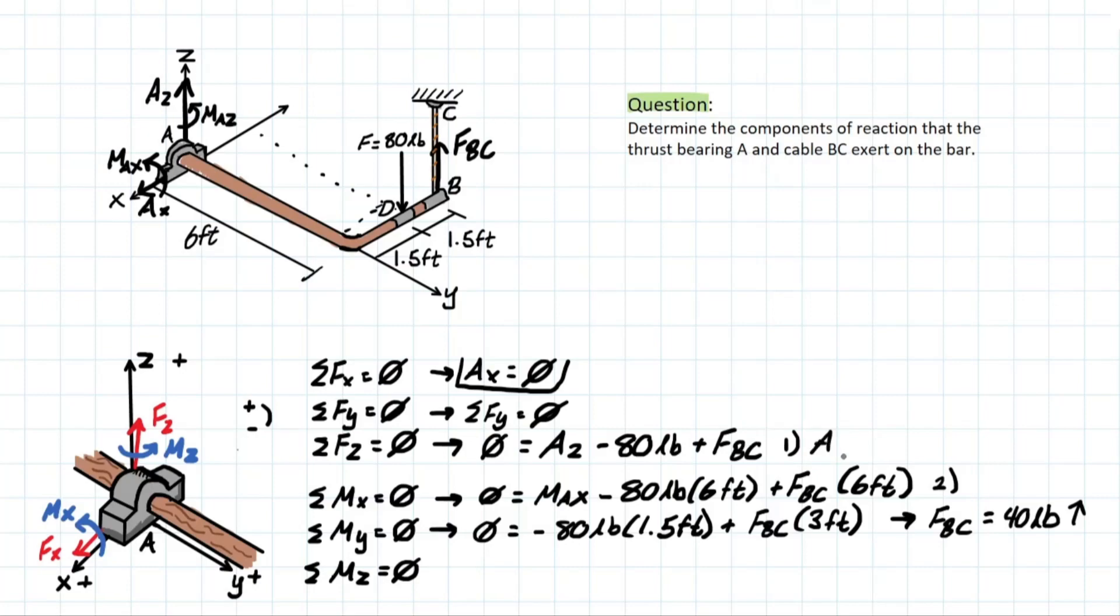Now we can actually solve for Az if we plug in FBC over here. So Az, let me just write there 40 pounds. Solving for Az, we're going to be left with also 40 pounds, which is giving us a positive so we know the upwards direction is correct. And then we can also solve for MAx here because we can plug here and plug 40 again. And MAx is going to equal 240 pounds per feet.